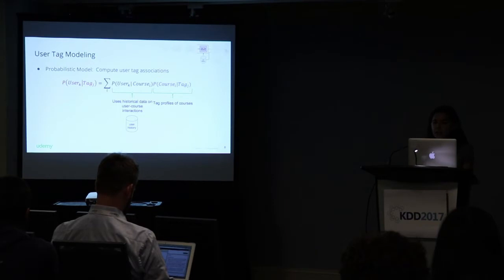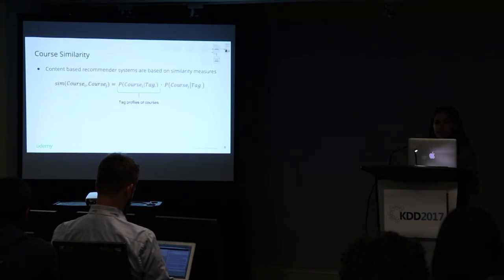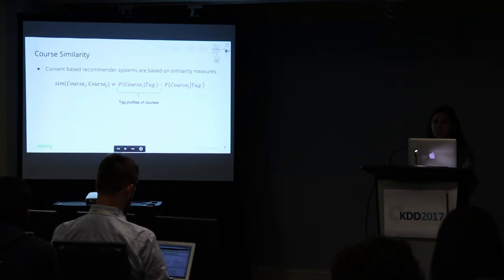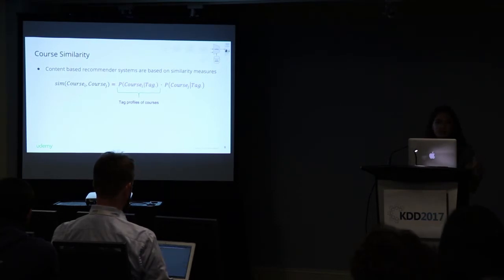Course tag profiles and user tag profiles have useful applications. Here is another use case we found very valuable: a similarity definition. Given two courses, since we now know the topic coverage of each, we can take a dot product of these two terms to understand the content similarity between any two courses.